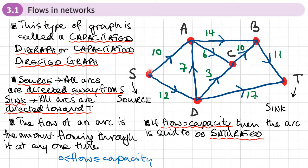Let's take arc SA, for example. It has a capacity of 10, so the maximum flow it can carry is 10. We can write down the flow at a particular time — let's put 8, written in a circle — which means although this arc has a capacity of 10, at this moment in time we only have a flow of 8, so it's not at its full capacity.